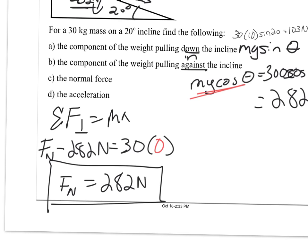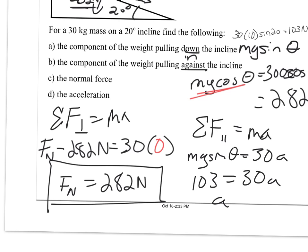And last but not least, we want to look at the acceleration of our block. We can say that the acceleration, we said our block is going to slide down the ramp. So our force that is parallel to the ramp equals ma. The only force we have that is in the parallel direction is mg sine of theta, which equals 30a. mg sine theta, we said was 103, is still 30a, which means that a is about 3.4 meters per second squared.